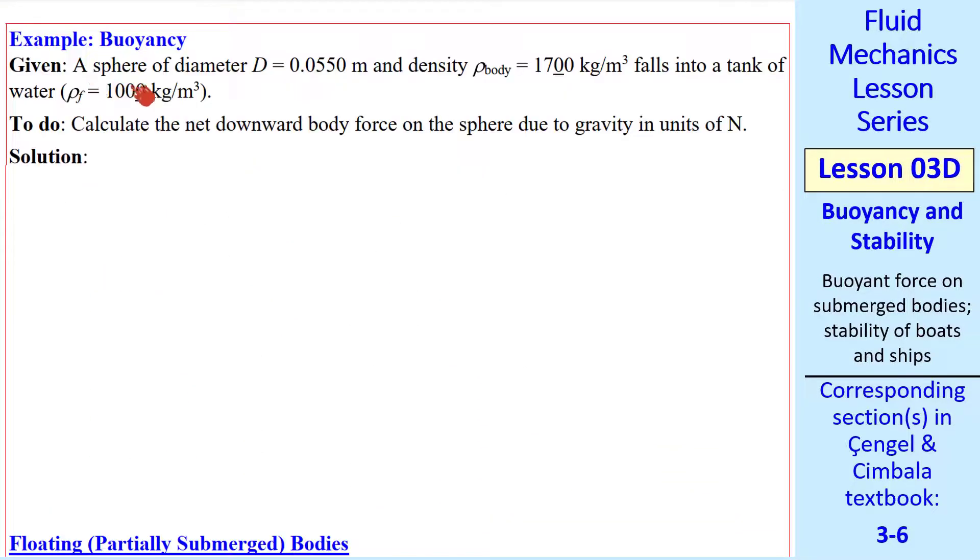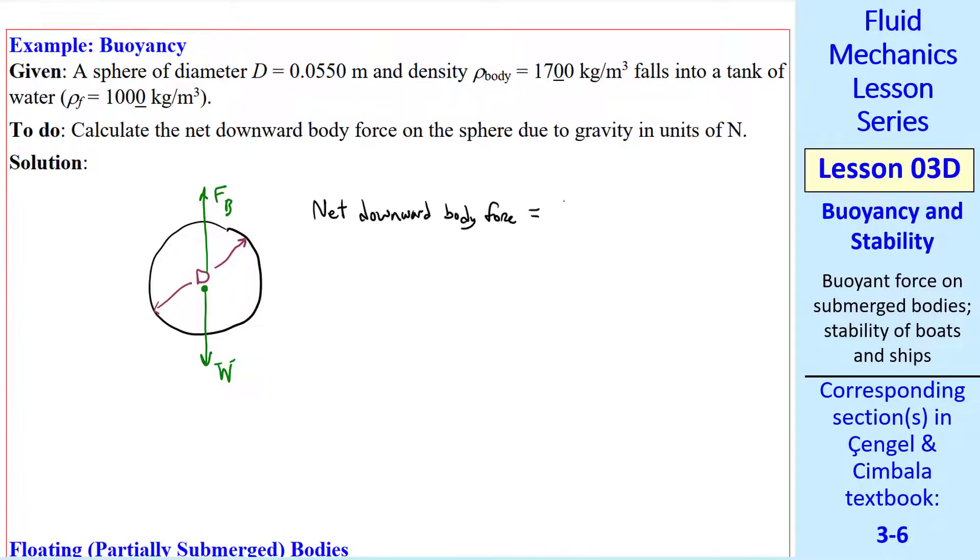Let's do an example. Suppose we have a sphere of a given diameter and a given density falling into a tank of water. Let's calculate the net downward body force on the sphere due to gravity. Let's draw our sphere of diameter D and some buoyant force F_b. If this sphere is falling in the water, there will also be a drag force. But at this point, we're only concerned with the net weight, or the net downward body force. Let's call the net downward body force F. F is simply W minus F_b.